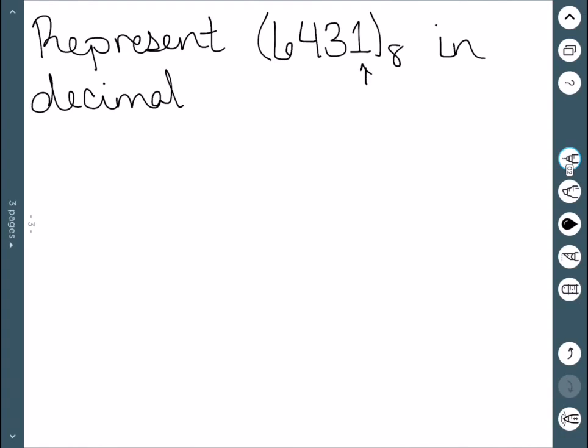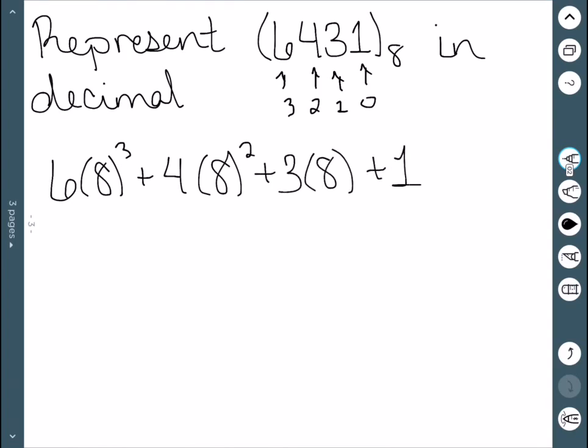Here's my 1's place. So that's 8 to the 0 power, 8 to the 1st power, 8 squared, and 8 cubed. So 6 times 8 cubed plus 4 times 8 squared plus 3 times 8 and then plus the last 1. And now we can simply work this out.